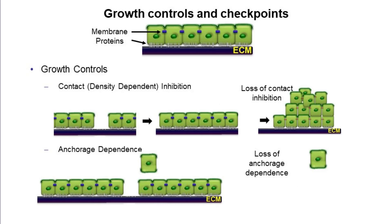First, I'll cover a couple of growth controls in place in multicellular organisms: contact inhibition, sometimes referred to as density-dependent inhibition, and anchorage dependence. In an animal like us, most cells are growing in solid tissues. We see a layer of cells connected to one another through membrane proteins that form cell-cell junctions. These cells are also joined to connective tissue in the extracellular matrix, connecting them to the rest of the body. These membrane-embedded proteins connect to the internal cytoskeleton, providing a structural linkage between the fibrous cytoskeleton and the fibrous extracellular matrix.